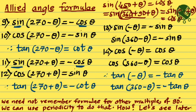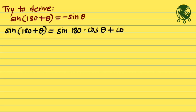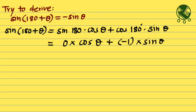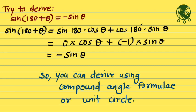In some other video I will revisit these allied angle formulas. Till then, practice deriving them yourself — for example, try to derive sine of 180 plus theta equals minus sine theta using the compound angle formulas. You can also use the unit circle. You now know how to remember and how to derive all the formulas for trigonometric ratios of allied angles.